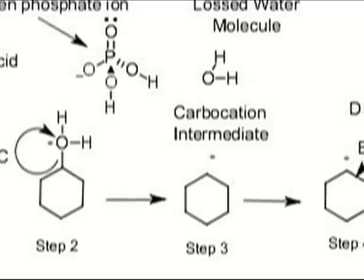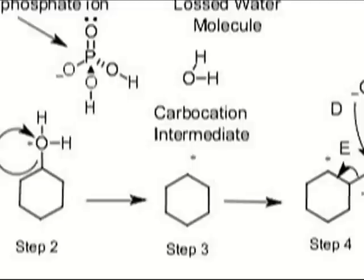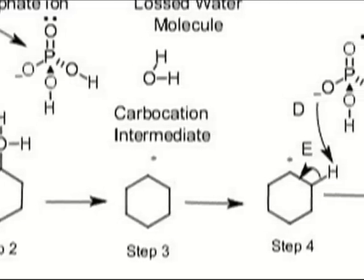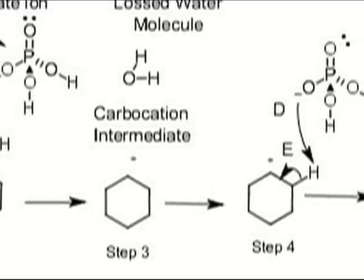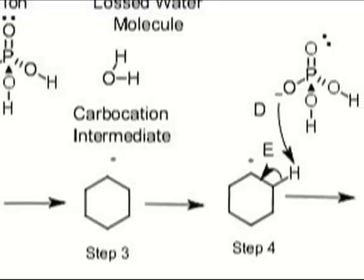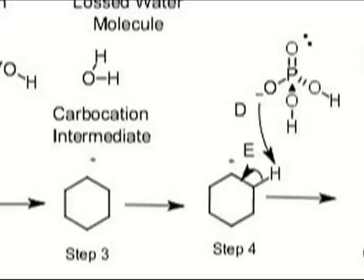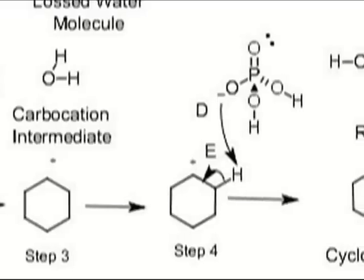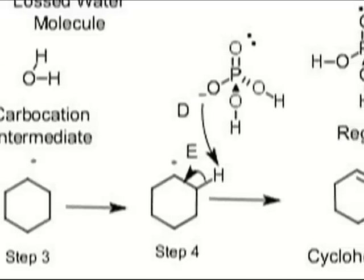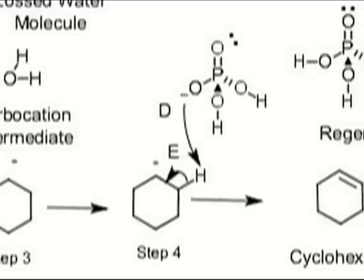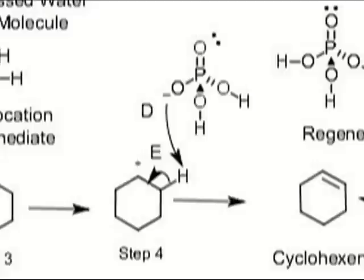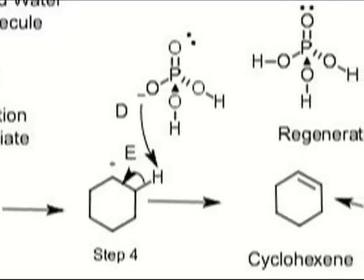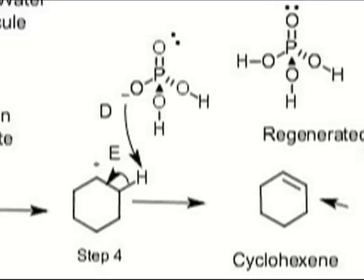I should also note that this is the rate determining step. Once the water has detached, we get our carbocation shown in step three. Immediately the carbocation is attacked by the phosphate ion to abstract a hydrogen, shown by arrow D. The hydrogen leaves its electrons behind to form the double bond, shown by arrow E, and now you're done. We have our cyclohexene and we've regenerated our acid catalyst.